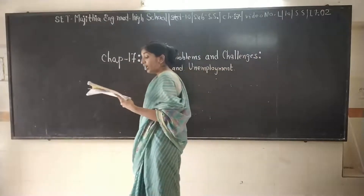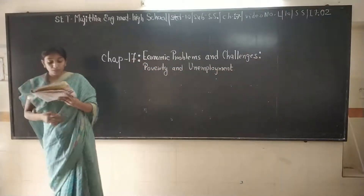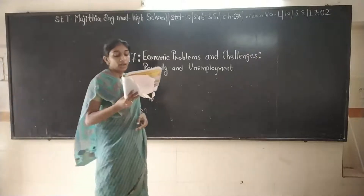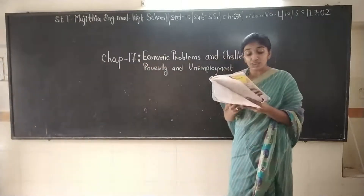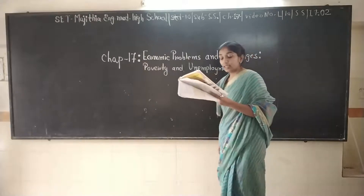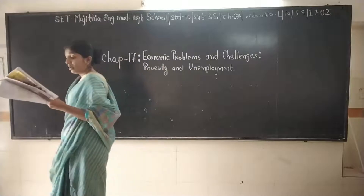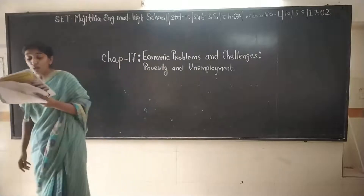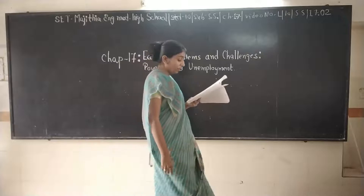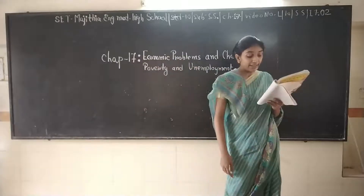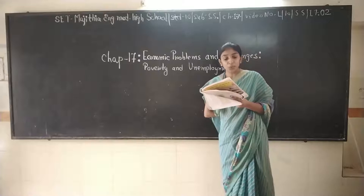The second category is urban poor. This includes temporary laborers, laborers on daily wages, domestic workers, rickshaw pullers, workers in shops or dhabas, and beggars who are not able to satisfy their basic necessities and are living openly on streets — these are considered urban poor.